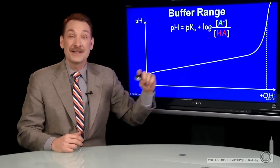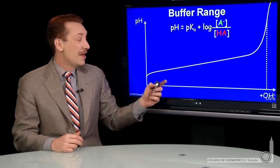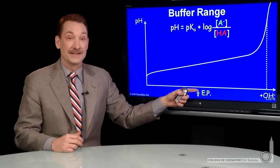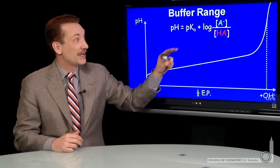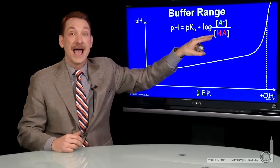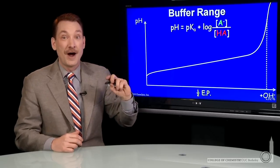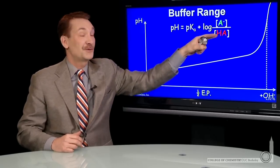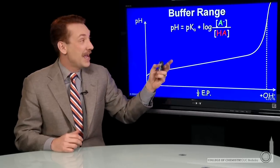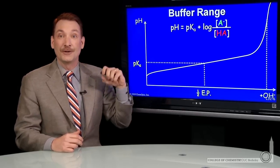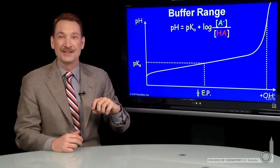So here, I've expanded the buffer region. And we know that at half equivalence, halfway to the equivalence point, the concentrations of the acid and base form are equal. So this ratio is 1, the log term is 0, and the pH is numerically equal to the pKa at half equivalence.